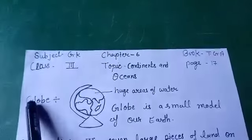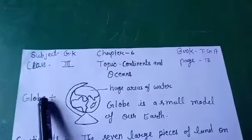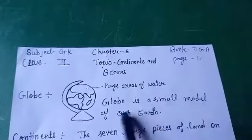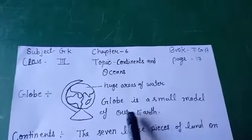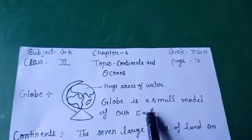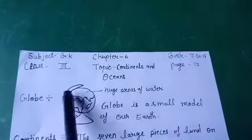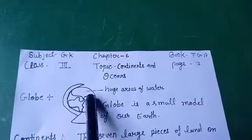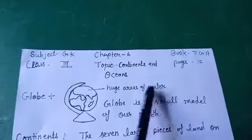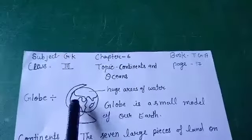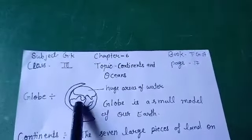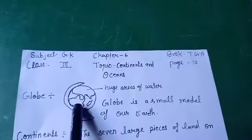So children, what do you know about the globe? Globe is a small model of our earth. You can see here a huge area of water, and there we have our oceans. We have our continents in the land part.